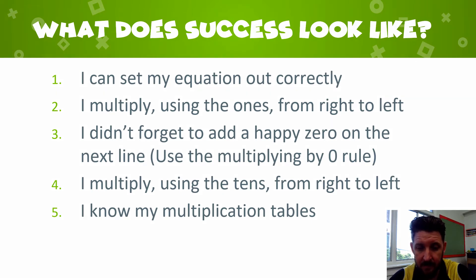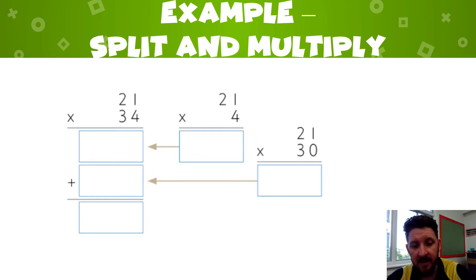For this one here we have an example and we've got 21 times 34. Now what that's asking us to do is to split this into two parts. So the first part here that we're going to split, I'm going to do it in yellow, is the 4 which is just here in the ones house, and we're going to multiply by the 21.